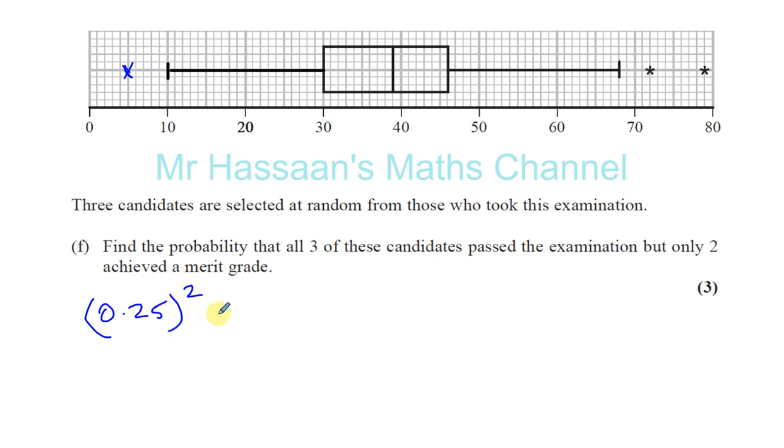Okay, they're in this range. So one of them is in this range, and the other two are in the top 25% of the people. So the one that passed but did not achieve a merit grade is in this range here, which is in the range that 50% of the people got, between the lower quartile and the upper quartile. So that's going to be times 0.5.